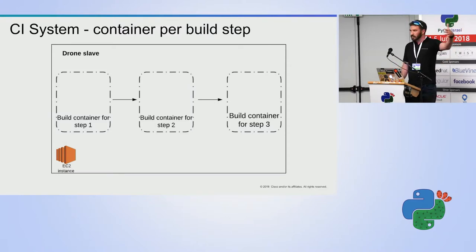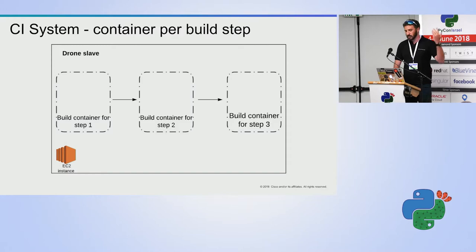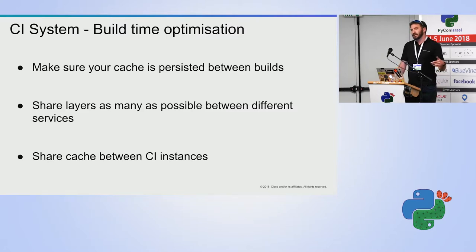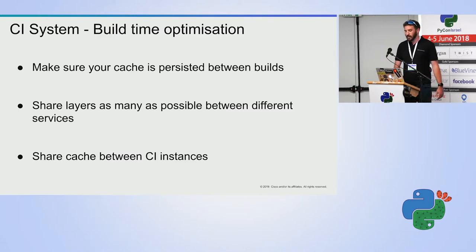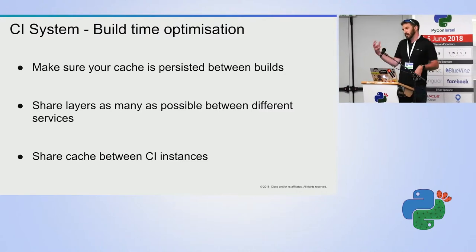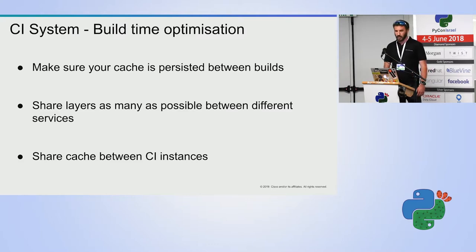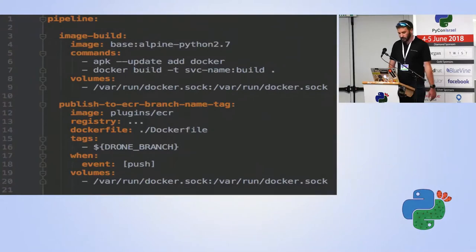We're running on EC2, but this is valid for any cloud provider. For each step in the build pipeline, the CI runs a new container that executes whatever commands you define. This raises some problems — for instance, cache invalidation between two containers in a build step, and between different builds. If one build has layers that aren't shared with the next instance, those layers can be invalidated and need to be reinstalled.